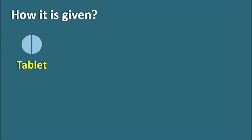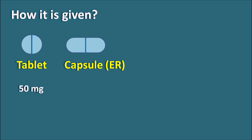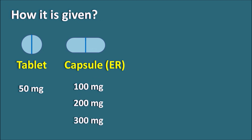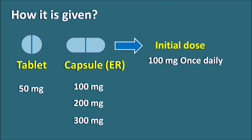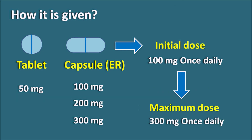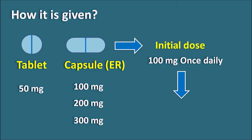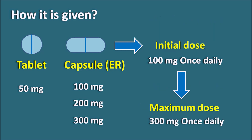How is it given? Tramadol is available as a tablet at a dose of 50 mg, and is also available in other doses and in combination with other analgesics. It is also available as an extended-release capsule at doses of 100 mg, 200 mg, and 300 mg. For the extended-release capsule, the initial dose starts at 100 mg once daily. The dose can be titrated according to usage, but the maximum dose for the extended-release formulation is 300 mg once daily.